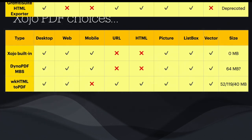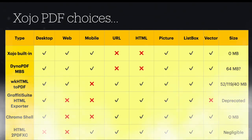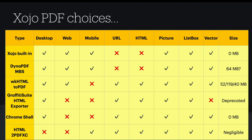From my investigations, there are six main choices available to Zojo developers for building PDFs. The first one is the built-in PDF libraries provided by Zojo. They can take any of the objects on screen and turn them into a PDF, and the great thing is there's no plug-in involved at all — no cost, no size overhead. So it's a good capability.